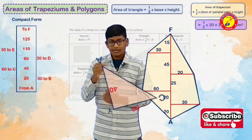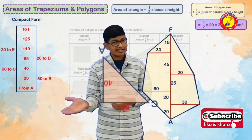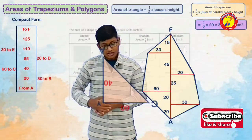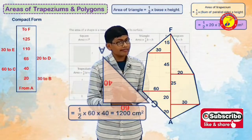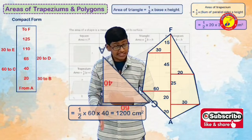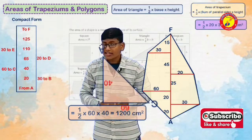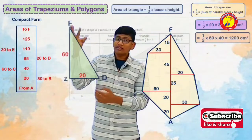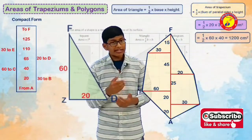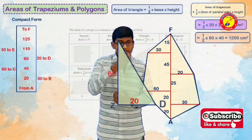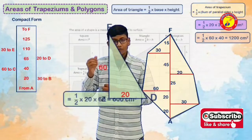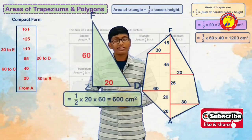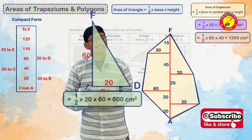Now we will go for the second triangle. It has a base 60 cm and height 40 cm. Half into base into height, which is nothing but half into 60 into 40. After calculation, we will get 1200 cm square. Again, the third triangle has base 20 cm and height 60 cm. Half into 20 into 60 is equal to 600 cm square.